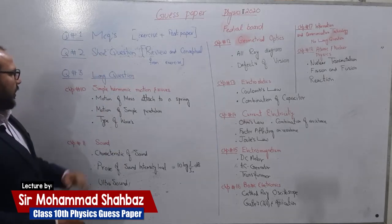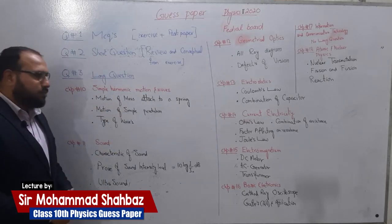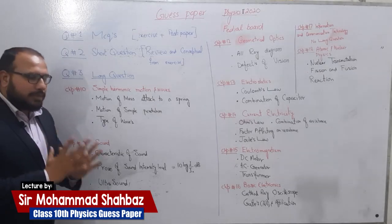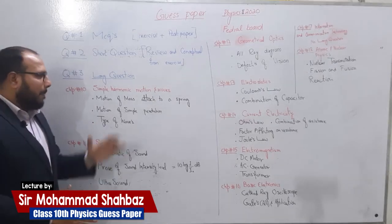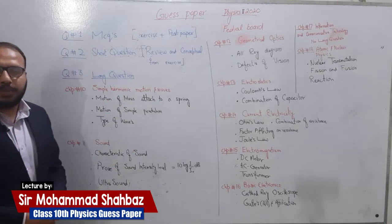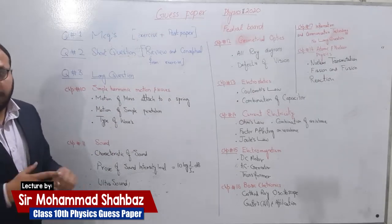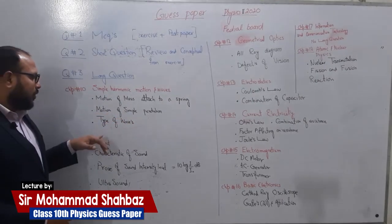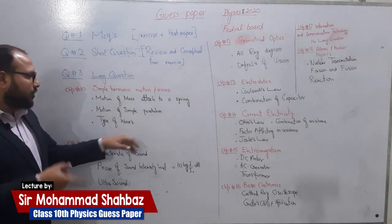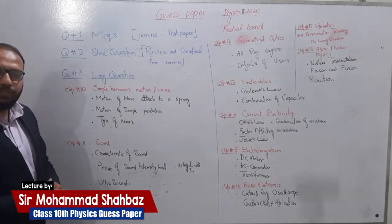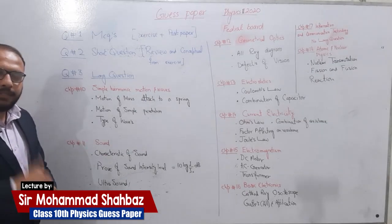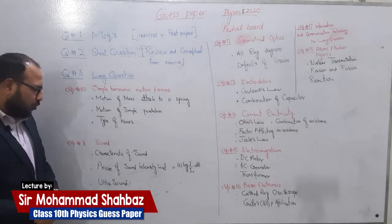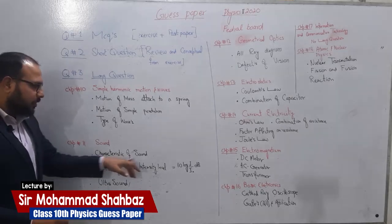Let's start from the first chapter: Simple Harmonic Motion. Motion of mass attached to a spring is the first long question — you must 100% memorize it, as it has appeared many times in past papers. Motion of a simple pendulum is the second. That's three questions from one chapter done.